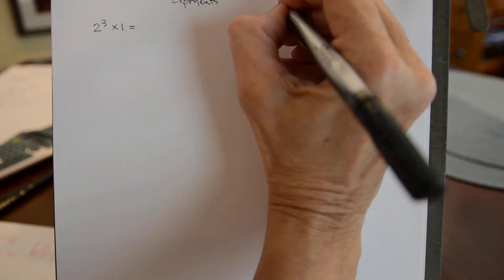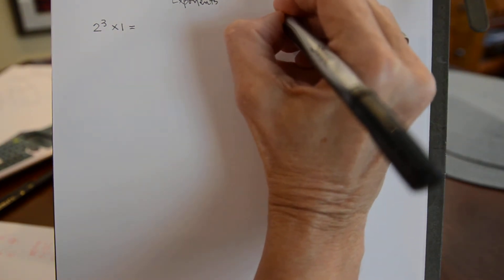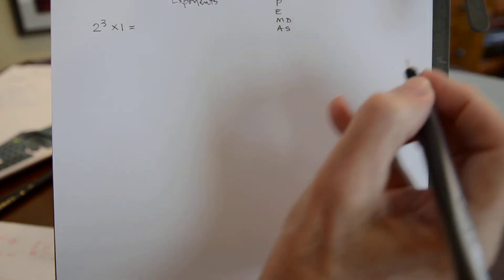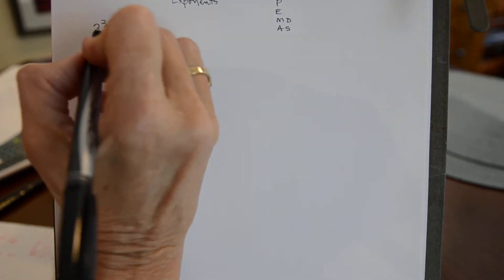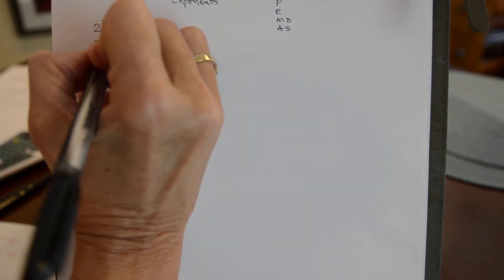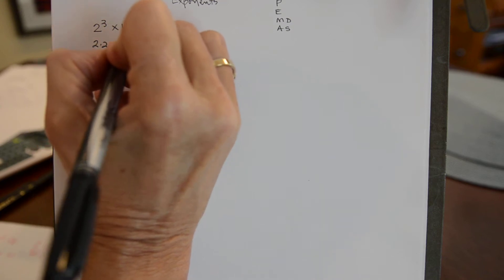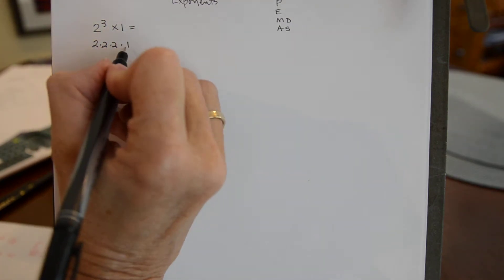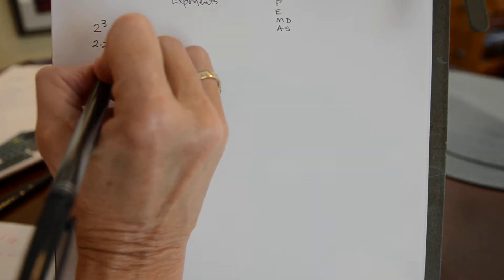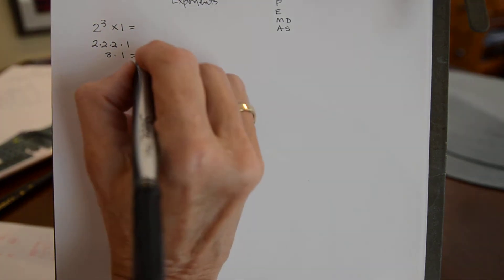That goes back to our please excuse my dear Aunt Sally, which reminds us the order. So 2 times 2, I'll just break it down so you can see what it is, and then it's times the 1. So 2 times 2 is 4 and 2 times 4 is 8 and 8 times 1 equals 8.